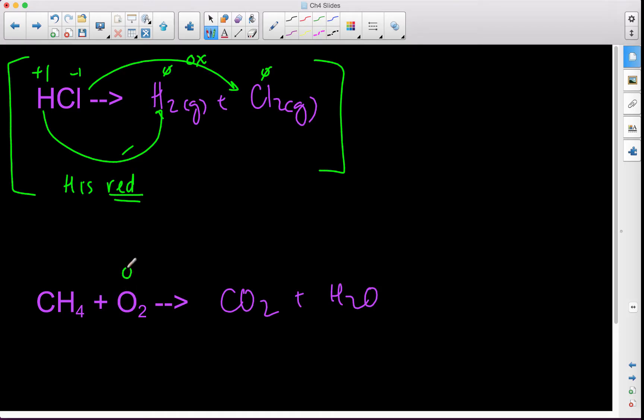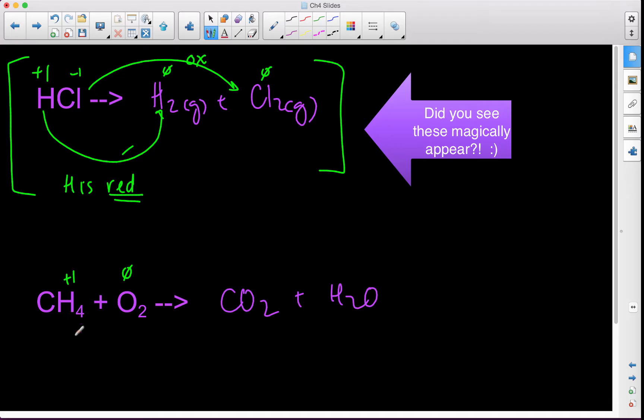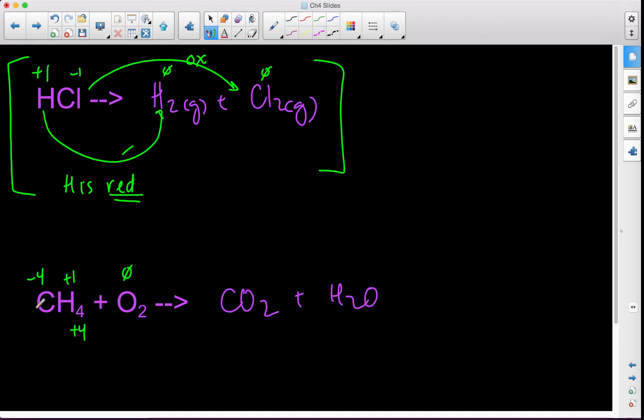Okay, so this oxidation state is zero because it's an element. This is, hydrogen is generally plus one, which makes this plus four, which means that carbon must be negative four. We go over here, this is negative two, which makes plus four, and this is negative two plus one. Well, as in like, this is negative two, so this is plus two, there's plus one.